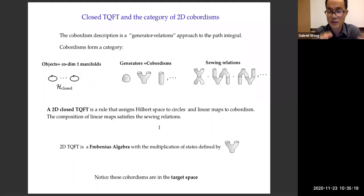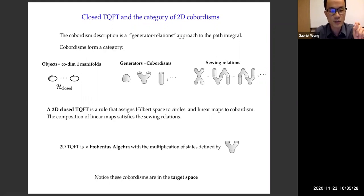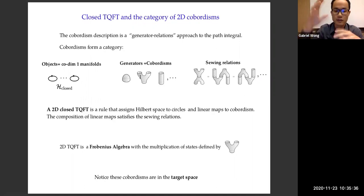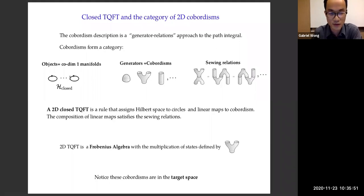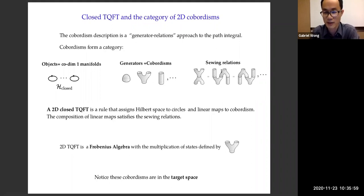A cobordism description is not a path integral in terms of local fields — it is a generators-and-relations approach. In two dimensions, this category has objects which are circles, and the generators are cobordisms — manifolds that interpolate between initial and final circles — and gluing of cobordisms must satisfy sewing relations. A 2D closed TQFT is a rule that assigns a Hilbert space — the closed string Hilbert space — to circles, assigns linear maps to cobordisms, and the composition of linear maps must satisfy the same sewing relations as the cobordisms. The particular structure of a 2D TQFT is a Frobenius algebra where the multiplication of states is given by the pair-of-pants diagram.